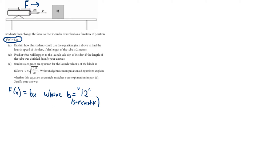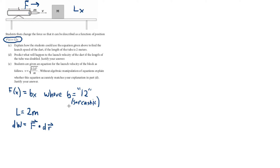I'll explain how students could use the equation given to find the launch speed of the dart if the length of the tube is L equals 2 meters. That's correct — it's fine to say the length of the tube is 2 meters because you're giving me a unit. When force is given in terms of position like it is with x here, you should be thinking work. So, dW equals f dotted with dr. In this case, dr would point along the x-axis. You're starting from zero, so dW equals f dx, which is bx dx.